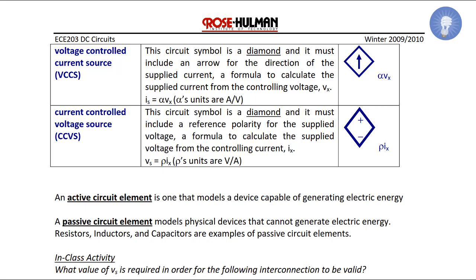An active circuit element is one that models a device capable of generating electric energy, such as the six sources we just described. A passive circuit element models physical devices that cannot generate electric energy, such as resistors, inductors, and capacitors. Please note that inductors and capacitors can deliver energy to a circuit, but only energy that has been previously absorbed from an active circuit element such as a voltage or current source.